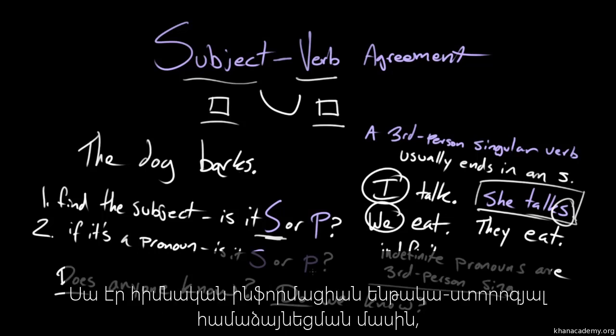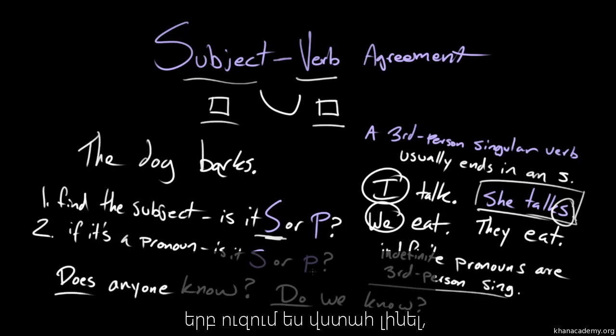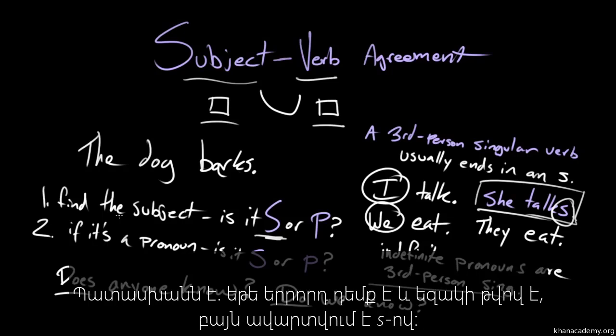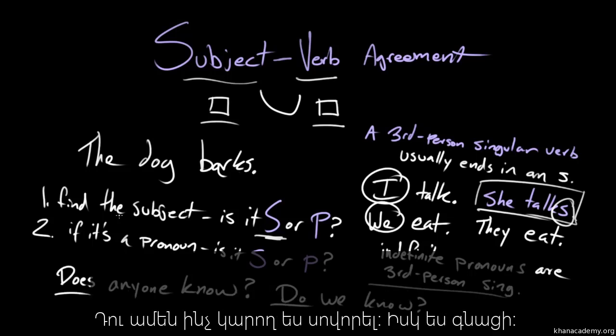And that's kind of the basic idea of subject-verb agreement is you want to make sure that the number of things in your subject matches up with the number in your predicate. So is the subject singular or plural? If it's third person singular, the verb probably ends in an S, even though the third person singular noun or pronoun does not. You can learn anything. David out.